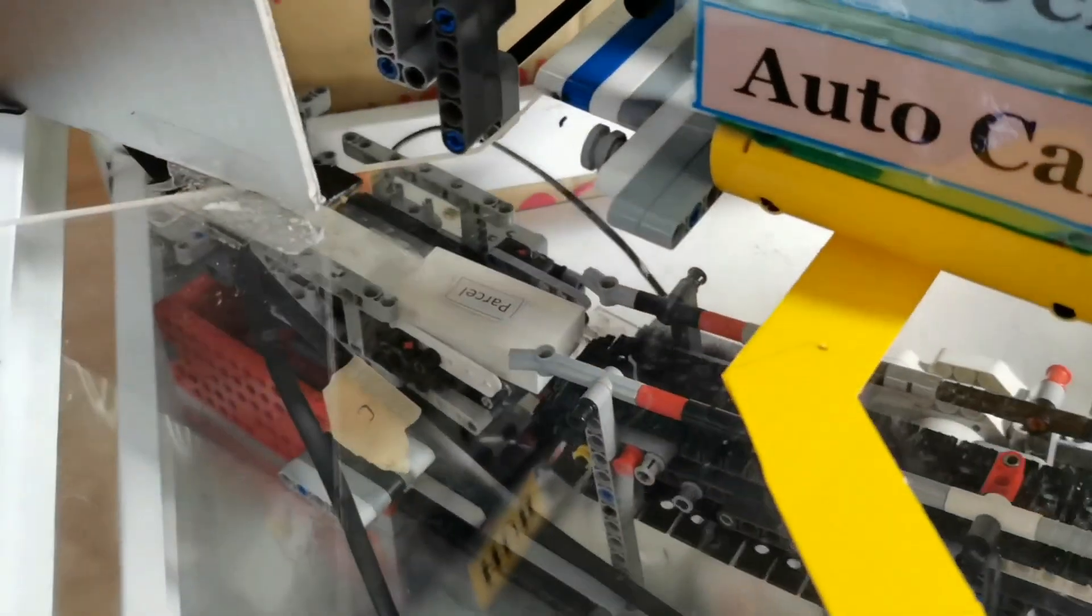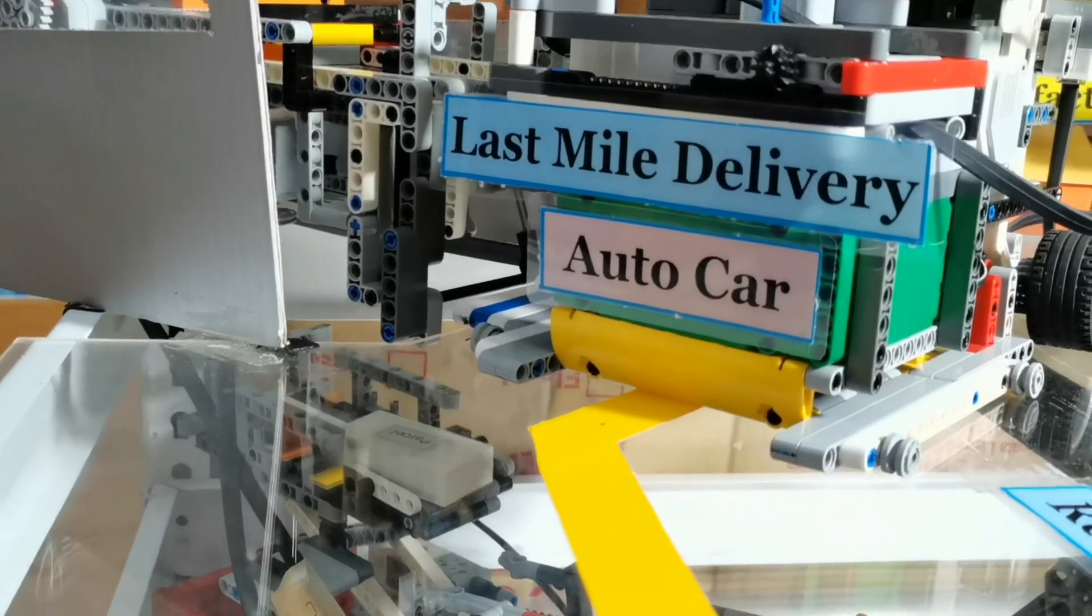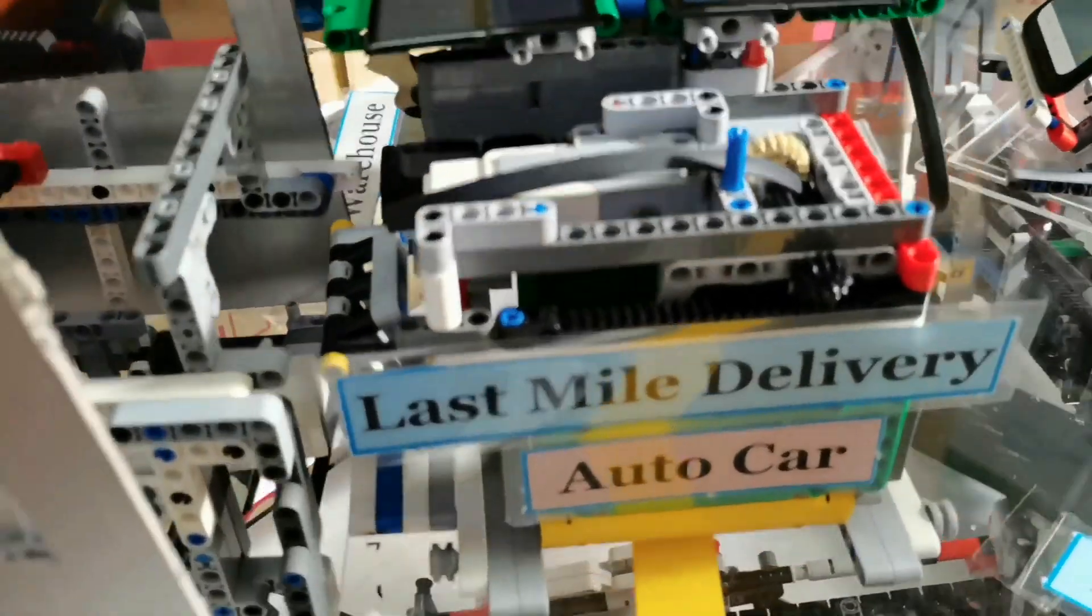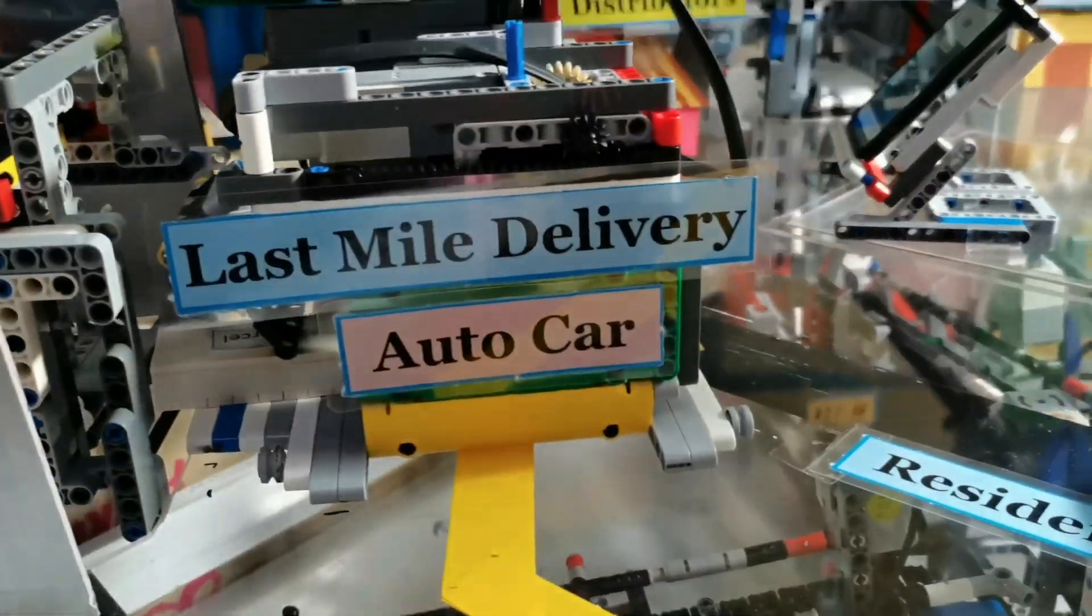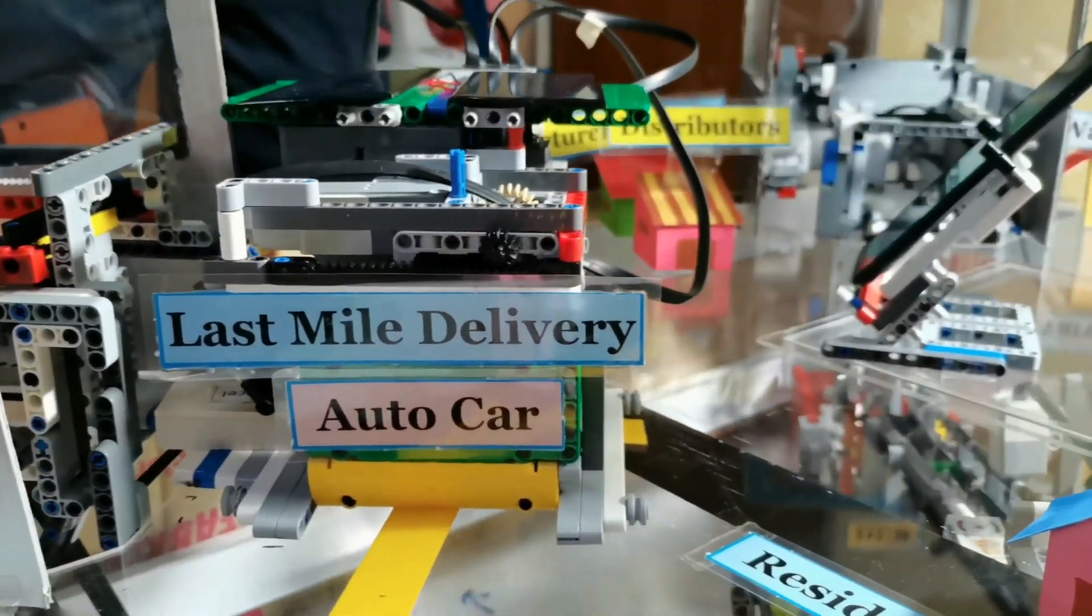The elevator will lift the goods from underground to ground level. At each hub, there is an auto solar car. The solar car will collect the goods and send it to end customers.